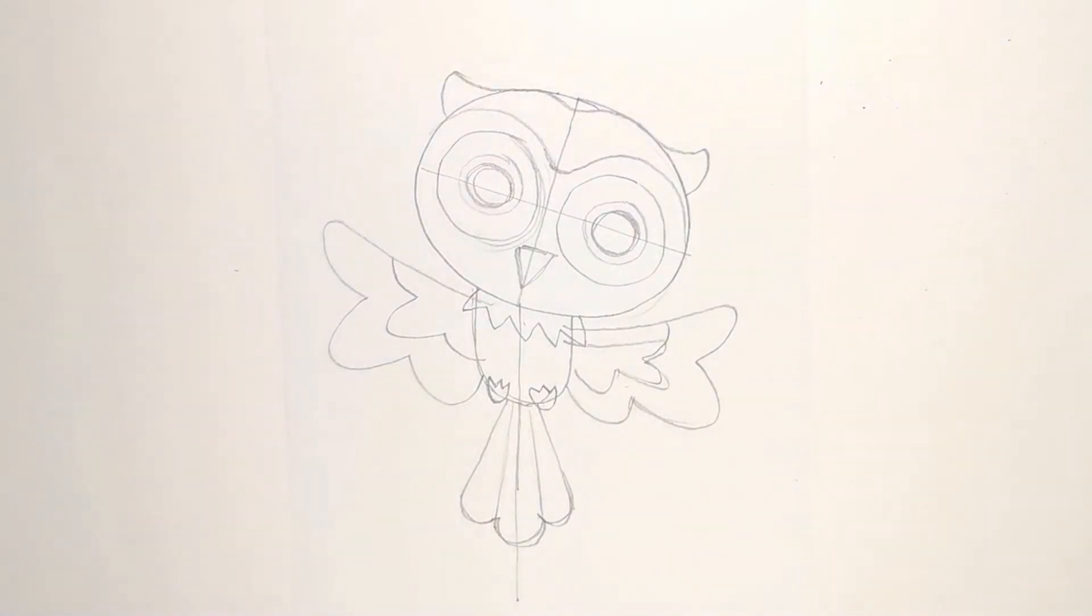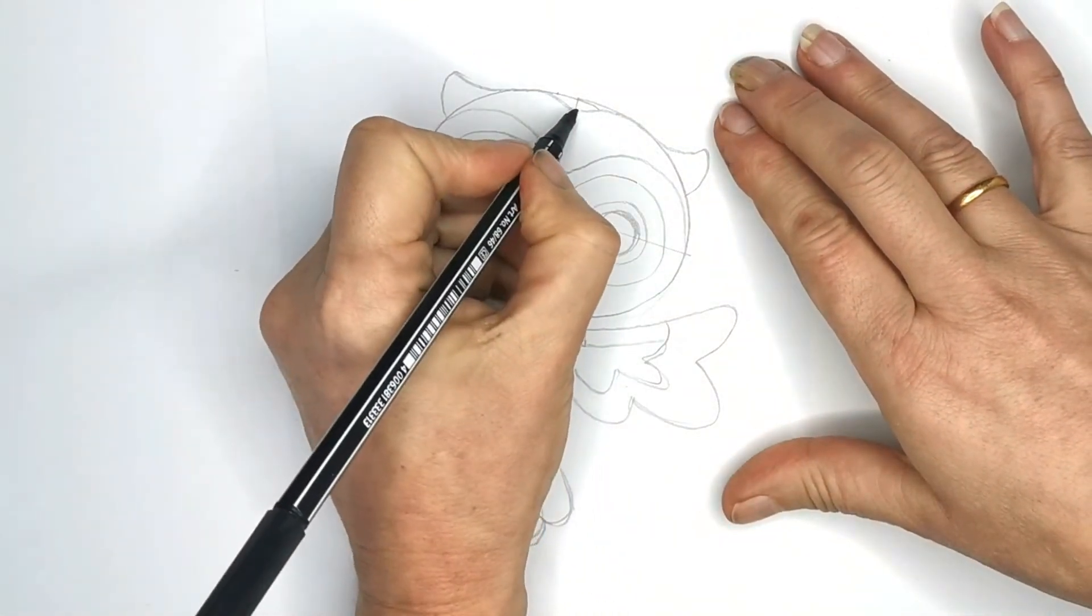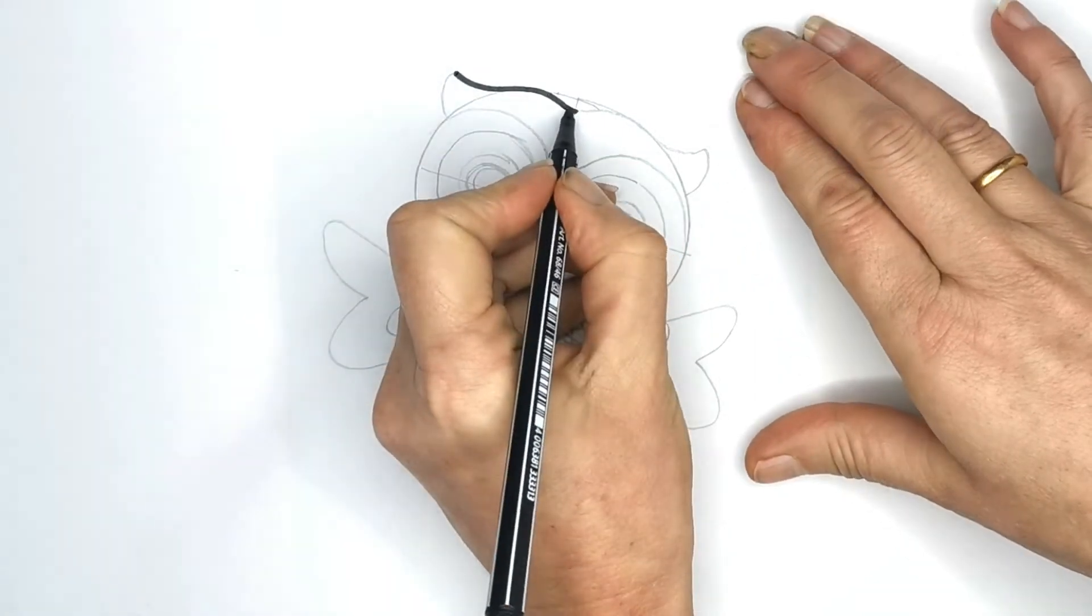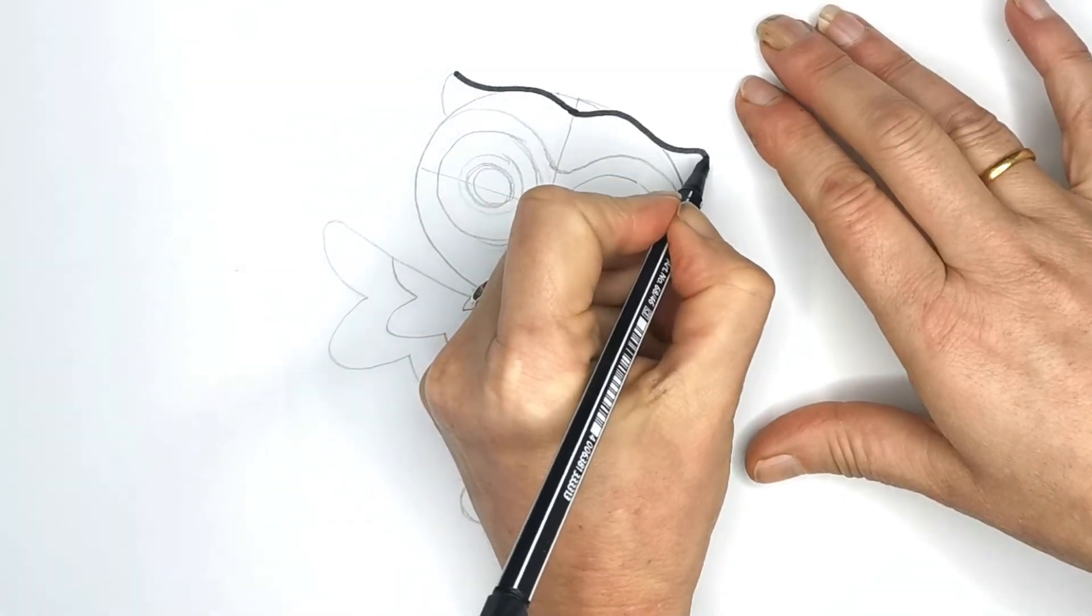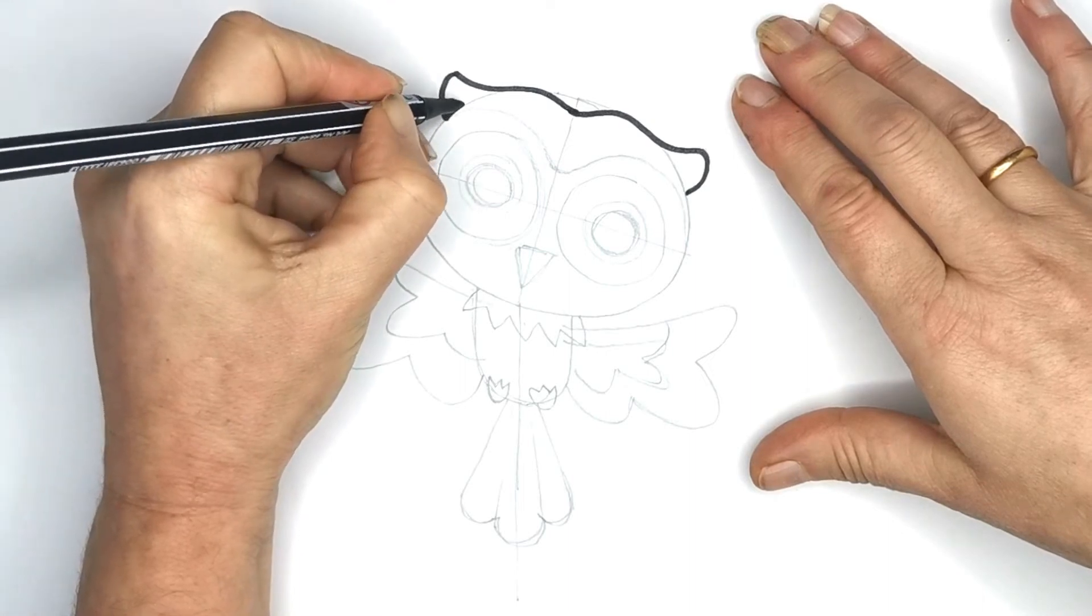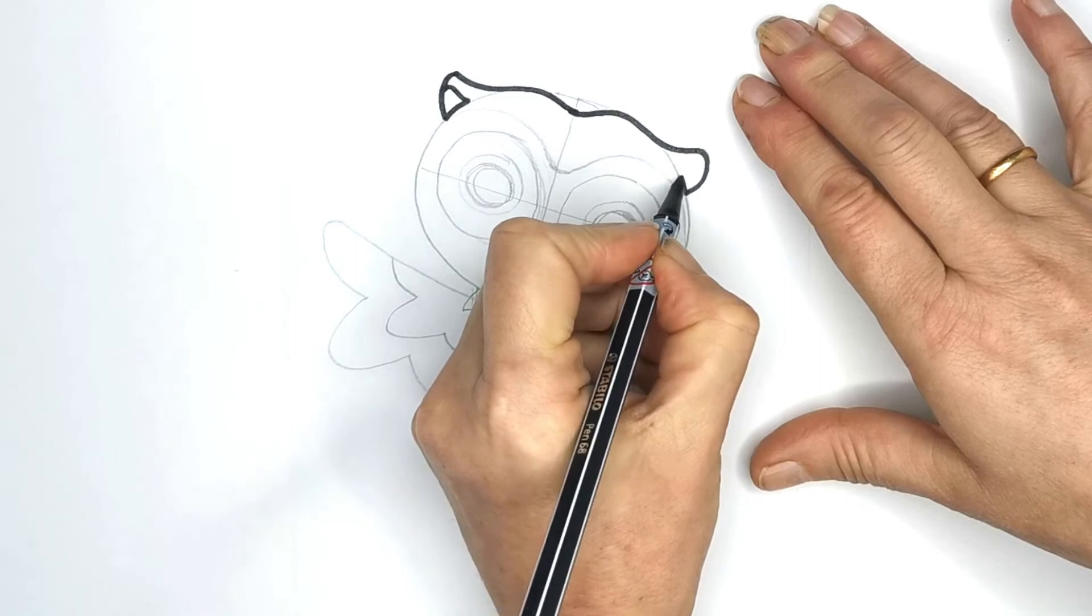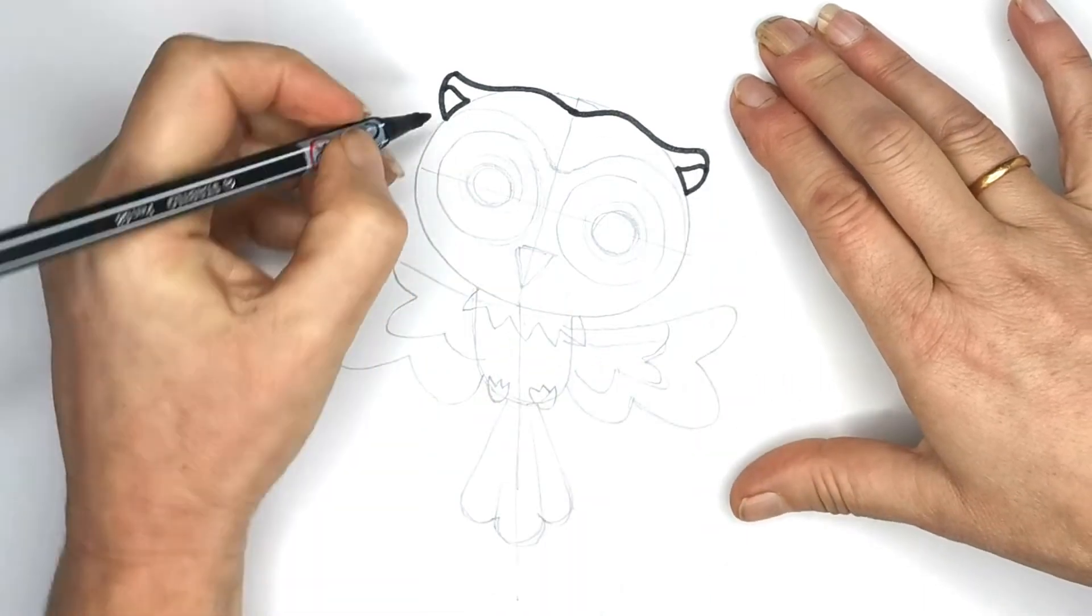Right, I'm going to start inking this in. I'm going to go for a nice thick pen. This is a one millimeter pen. And I'm just going to confidently draw in these lines now. I'm going to come round to there and go up like this. And the same on this side.